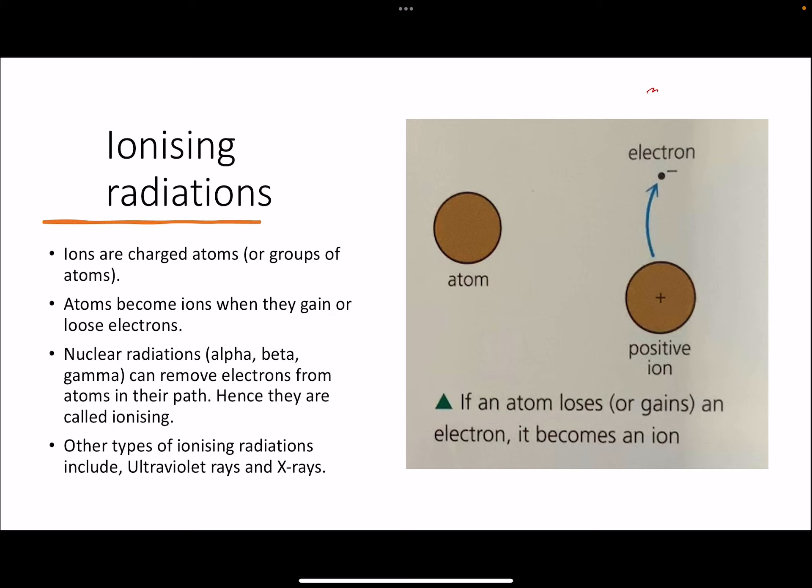Okay, welcome back to part two of this series where we are covering the chapter of radioactivity for O-level physics. In this part we are going to continue our discussion about those alpha, beta, and gamma radiations that we introduced in the previous part. Now if you remember, we call them ionizing radiations. What does that mean? Why are we calling them ionizing radiations?